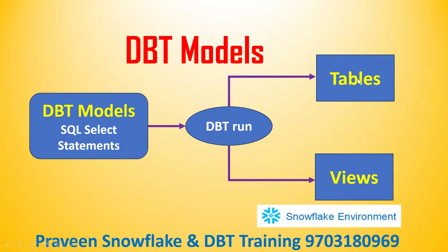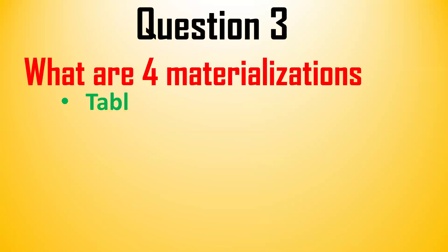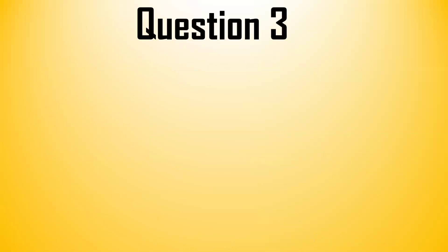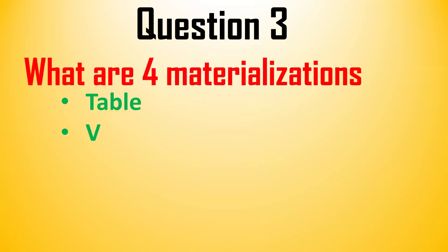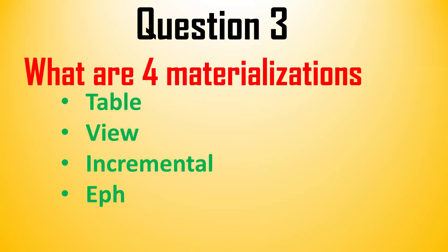When you run a DBT model, the respective objects — tables or views — will be created based on the transformation logic built in the .SQL file. The next question is: what are the four materializations? These are table, view, incremental, and ephemeral. These are the four materializations supported by DBT.